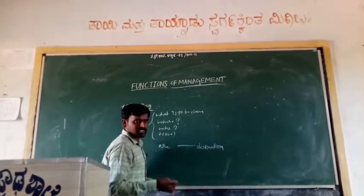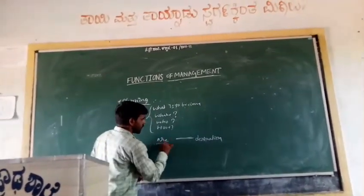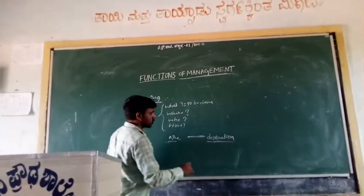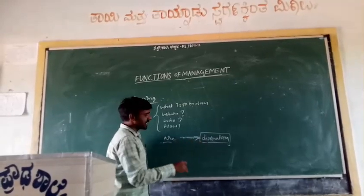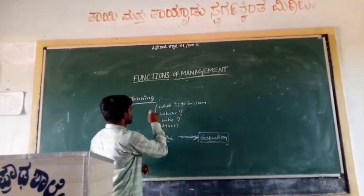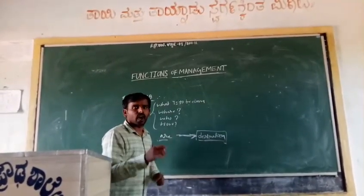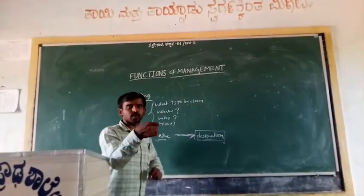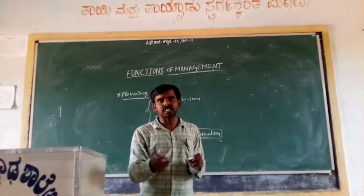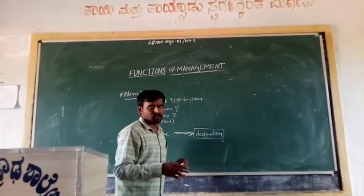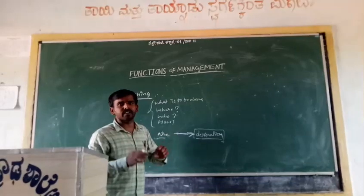Planning acts as a bridge which fills the gap between where we are and where we want to go. In order to reach our destination, we are supposed to go on a particular path, and deciding that particular path in advance is called planning. The success of your plan always depends on the accuracy of your predictions, because a plan is based on predictions.